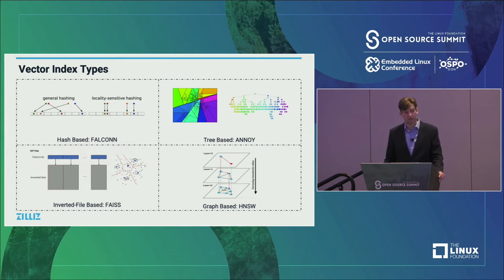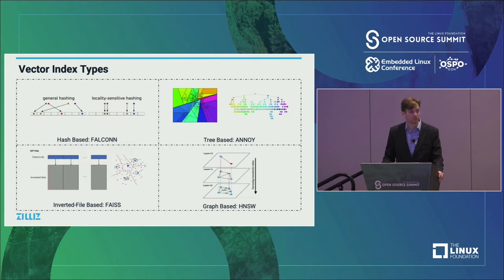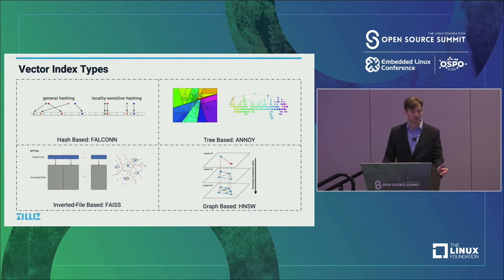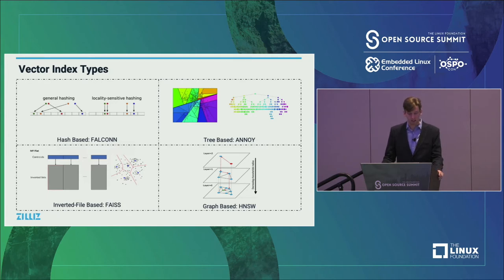The next type is tree-based, with Spotify's Annoy algorithm. Annoy works like a binary tree: you take two random points and create a hyperplane between the data as your first split, then keep splitting recursively. You can specify how many leaves you want at the bottom. When searching, you just run down the binary tree following which side your query falls on. To improve accuracy, since it's randomized, you can create a forest of trees and throw them into a priority queue, resulting in a fast and reliable search method.